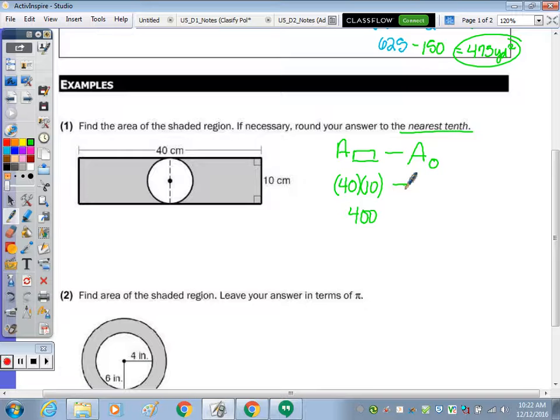minus area of a circle is pi r squared. So looking here, this diameter matches this side here, which is 10. So if the diameter is 10, our radius must be half of that, 5. So minus pi times 5 squared. So minus 25 pi.